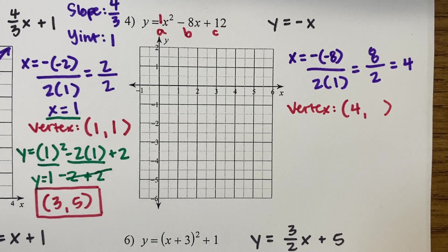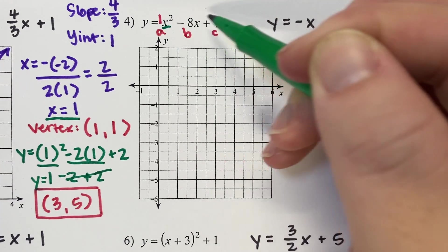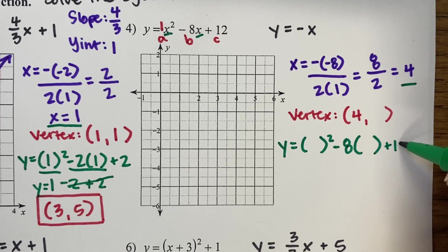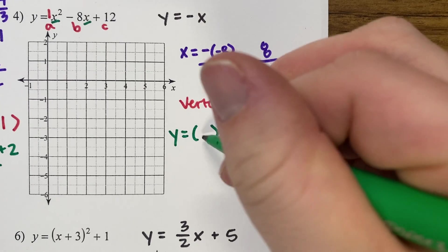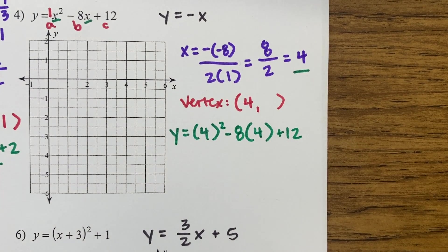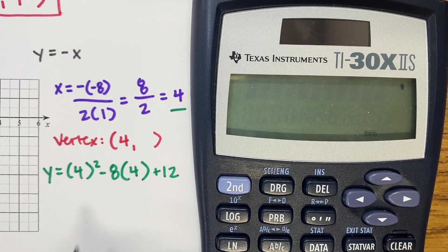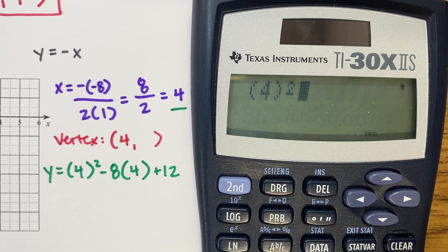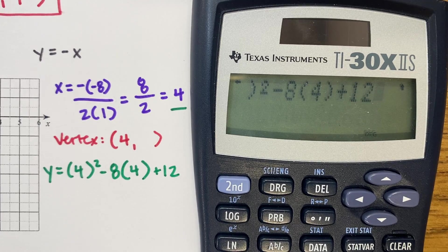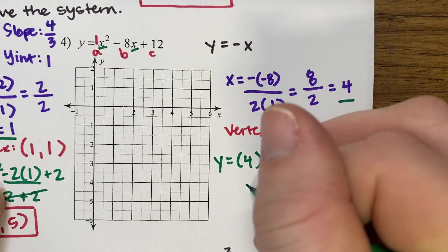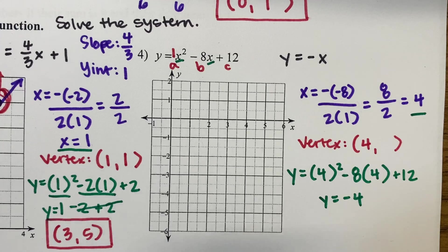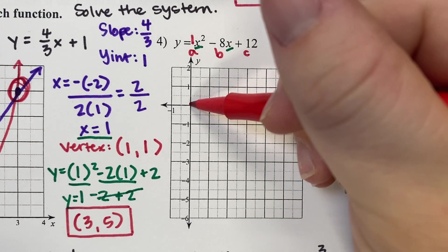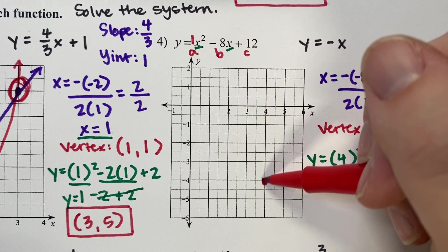Now we need the y part of the vertex. We plug x equals 4 into the original quadratic: y equals x squared minus 8 times x plus 12. Punch it into a calculator exactly as written — make it look like it does on paper so PEMDAS knows how to solve it. The result is negative 4. So our vertex is 4, negative 4. Find positive 4 on the x-axis, go down to negative 4 on the y-axis — that's our vertex.